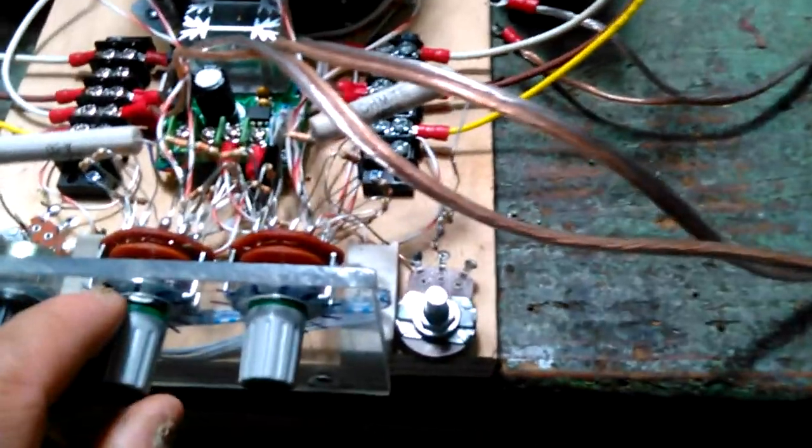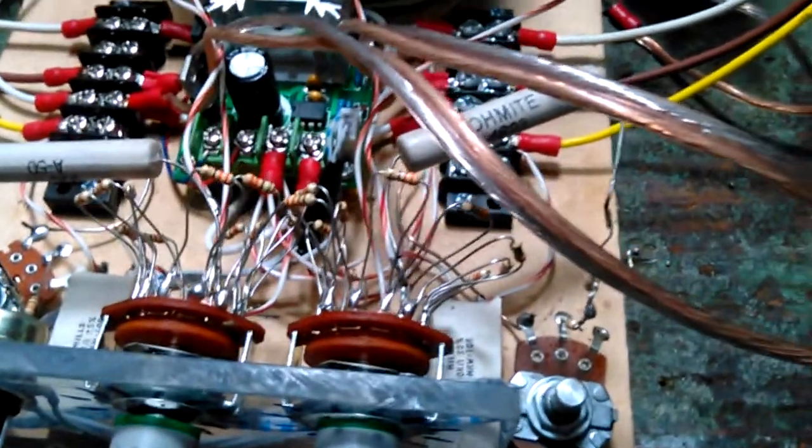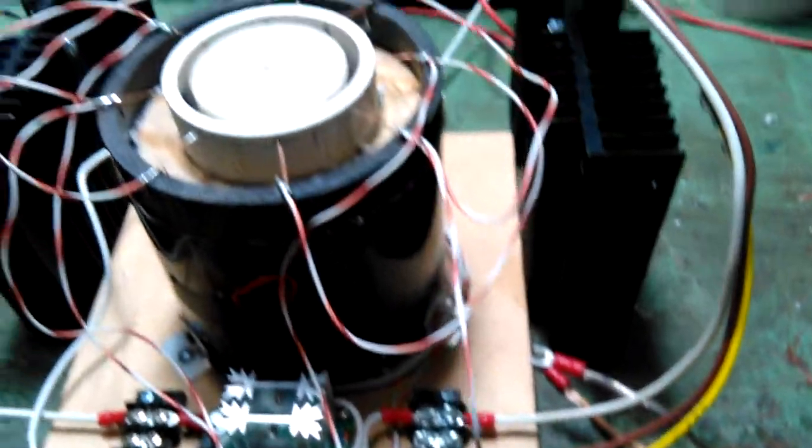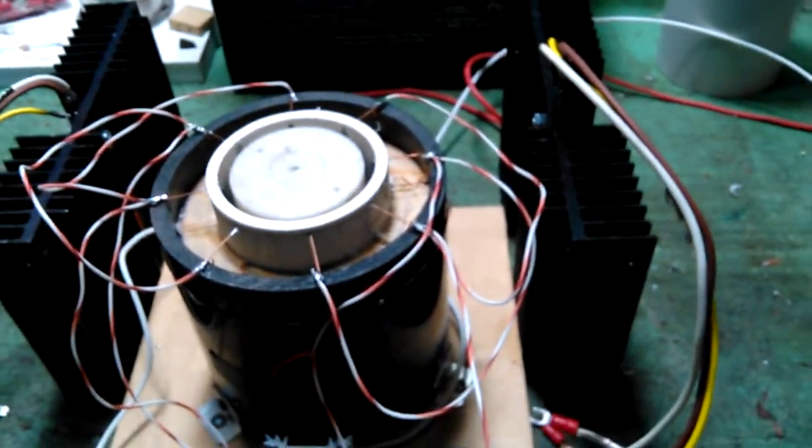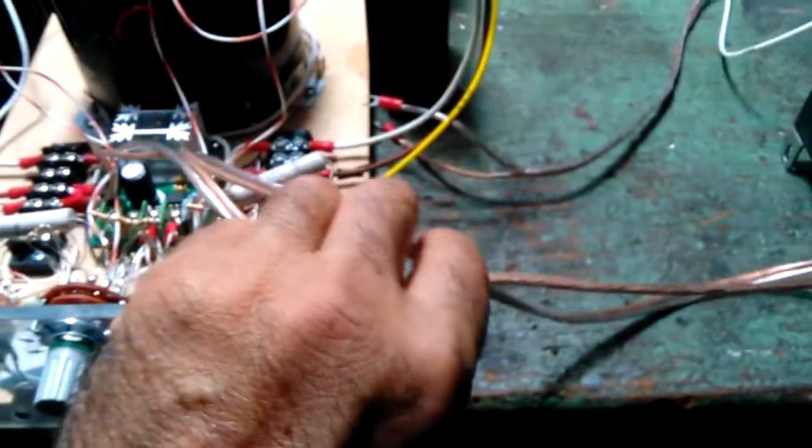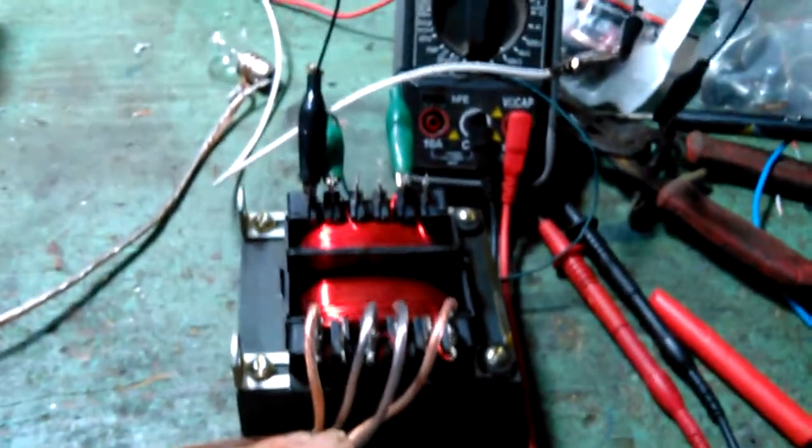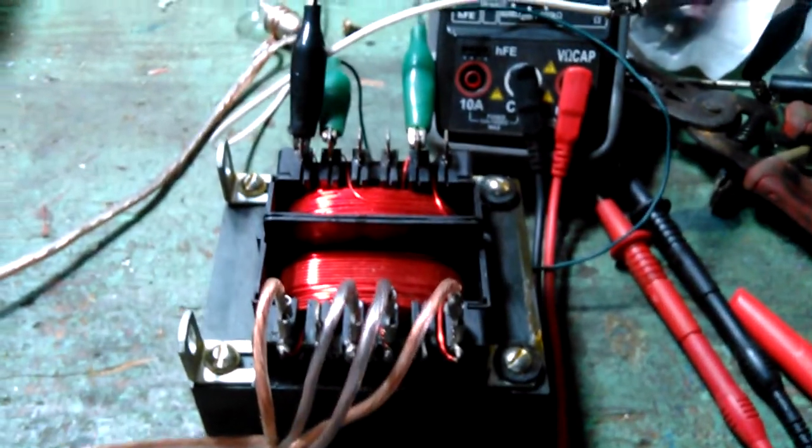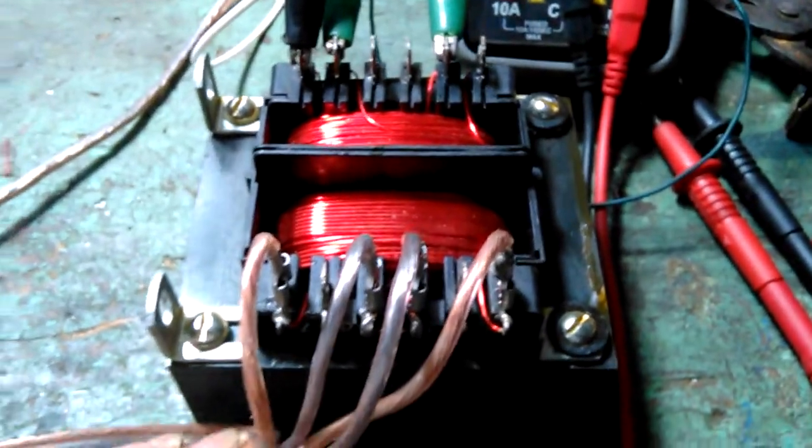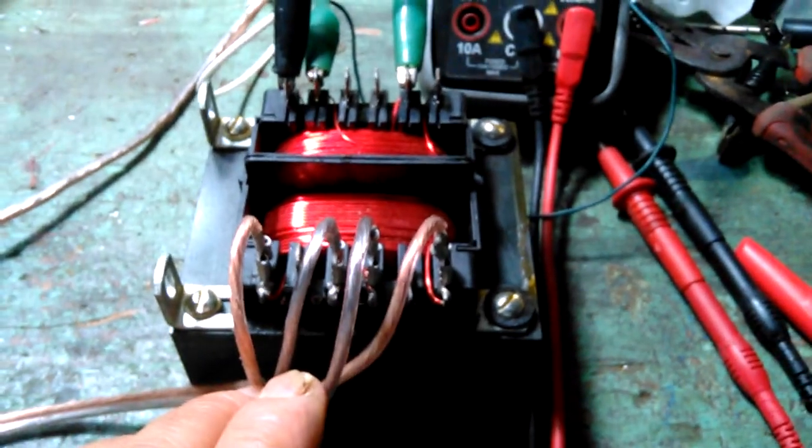...knobs here and a whole bunch of resistors that regulate the function of those HEXFET transistors. Then these two wires are the output. They come to this transformer which has two primary windings, and so the...